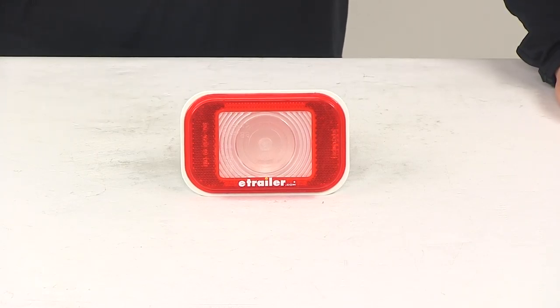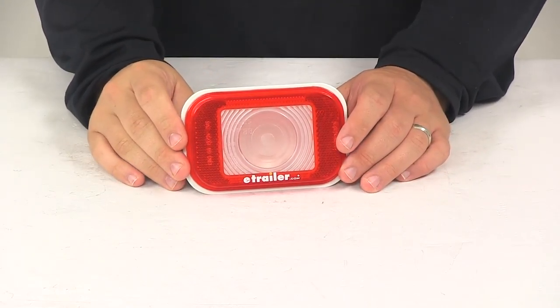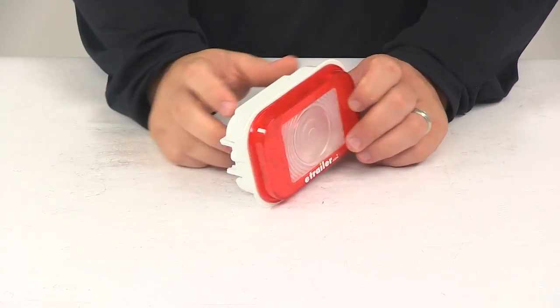Today we're going to be taking a look at the Optronics Backup Light with Red Reflex Reflector. This is a rectangular backup light that's designed for trailers and utility trucks.